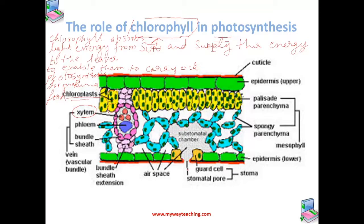Also in this figure we can see stomata — this is the pore, and we also have the two guard cells. These green dots here are chloroplasts, which contain chlorophyll.